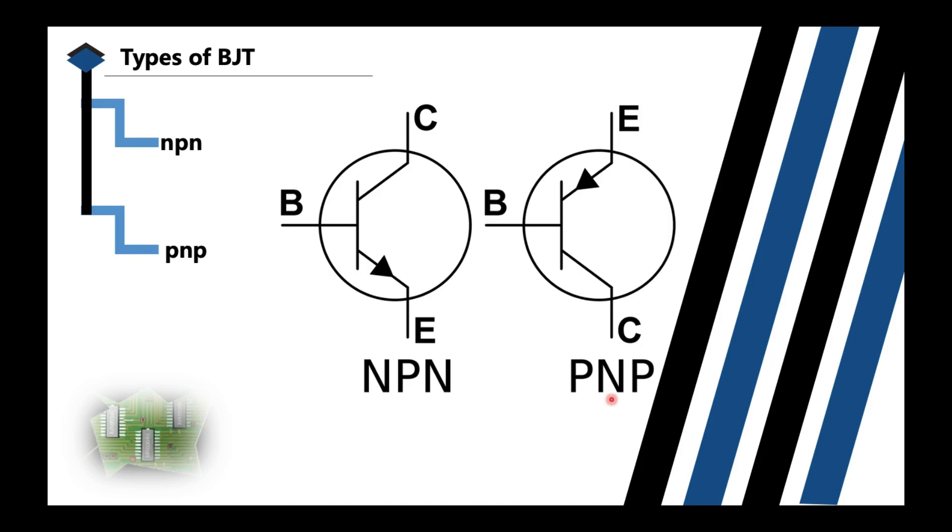How do you easily remember which is NPN and PNP? Just look at the arrow. NPN means 'not pointing in,' so the arrow points out. PNP means 'pointing in,' so you can see the arrow is pointing in.